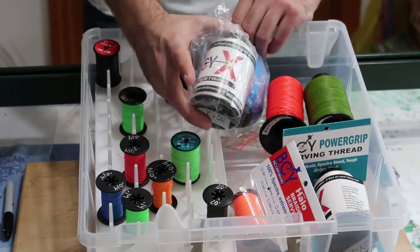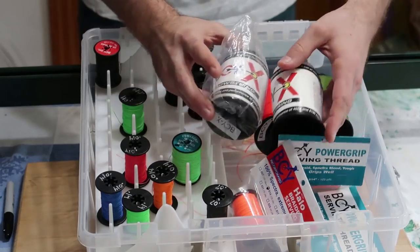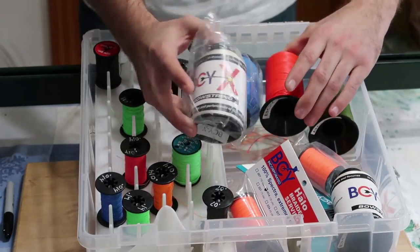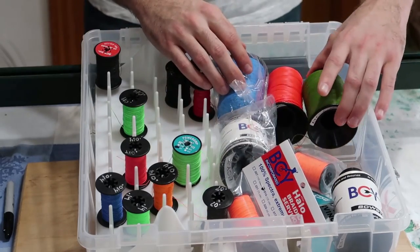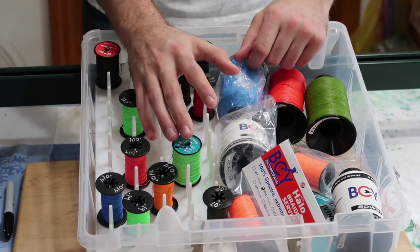My favorite type of bowstring, as you can see, is the BCYX. I have four spools of it: two whites, a bright red, a blue, and this darker forest green. BCY makes a ton of different colors.